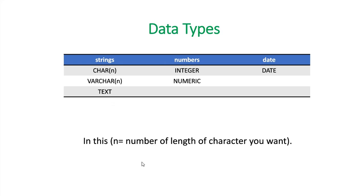So for strings, what are the data types available in PostgreSQL for storing strings? There are mainly three available: char(n), varchar(n) and text. So what is n? n defines the length of characters you want to store inside the table. n is going to be a positive integer — 1, 2, 3, 4 or anything — it defines the length of your string or character you are going to store inside the table.